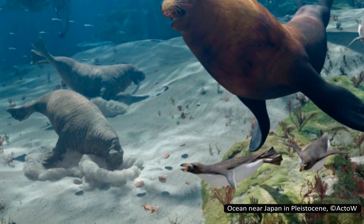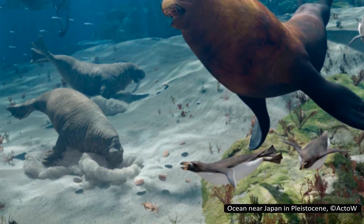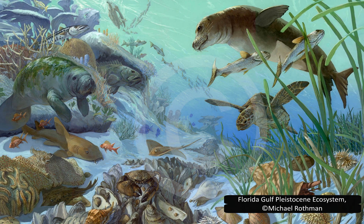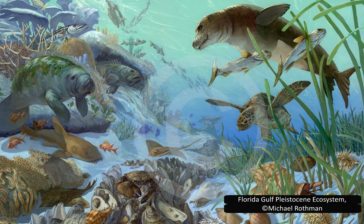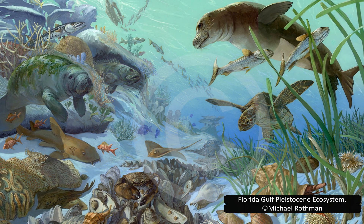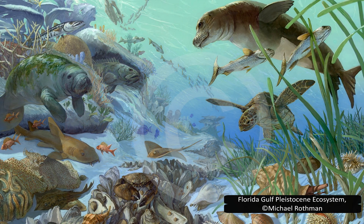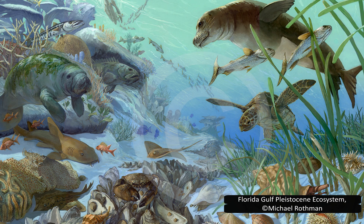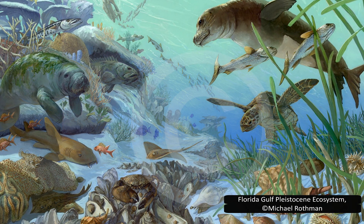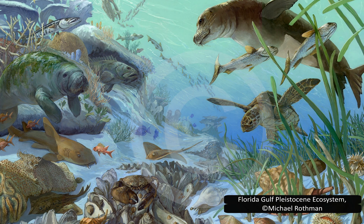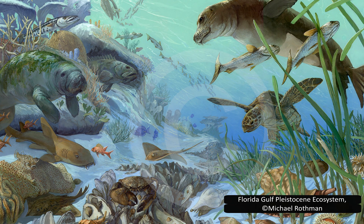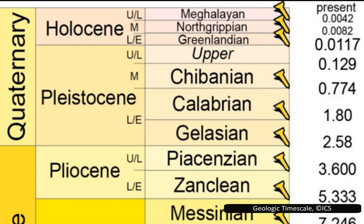Even the deep ocean wasn't untouched, as changes in temperature and ocean circulation cascaded into food webs. So while the drama of the Ice Age often plays out on land, the oceans had their own version of extinction and survival, just below the surface. But not every ecosystem bounced back. Some species, on land and in the sea, never returned. And that's where the real story of the Quaternary begins.